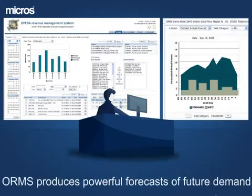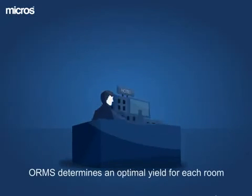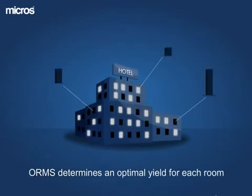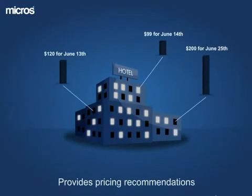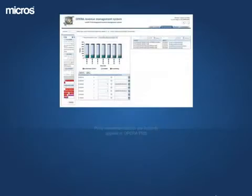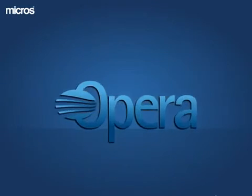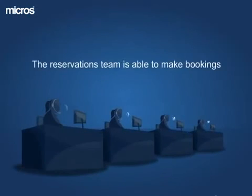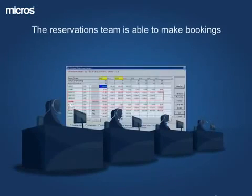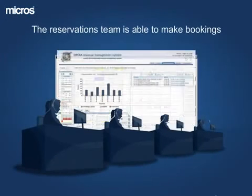Based on these forecasts, ORMS determines an optimal yield for each room, which in turn provides pricing recommendations on the interactive dashboard. Once approved, the price recommendations are instantly applied in Opera PMS. Immediately, the reservations team is able to make bookings based on the approved price recommendations.